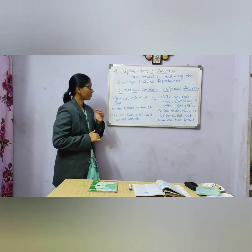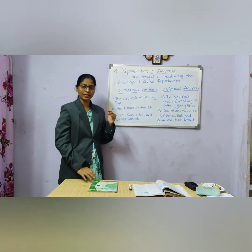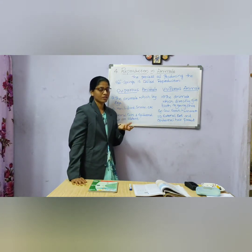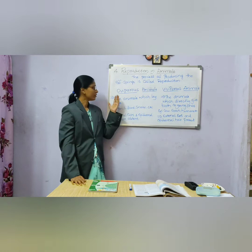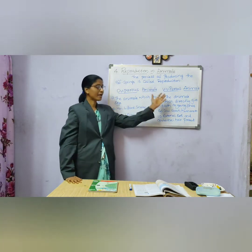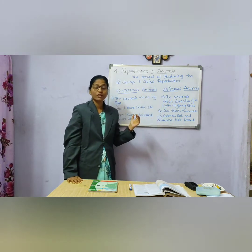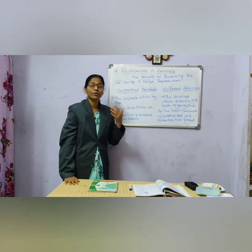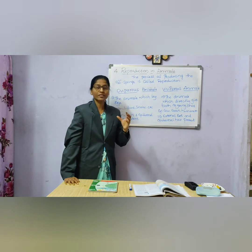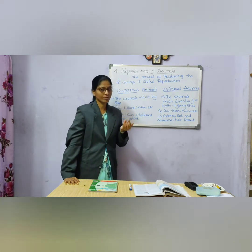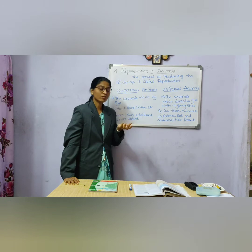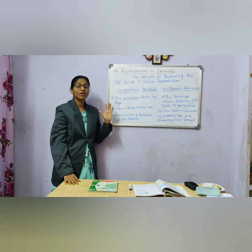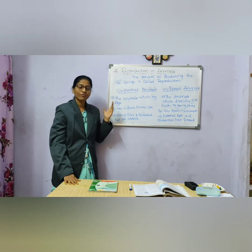Here we have two different types of animals depending upon the production of offsprings. They are oviparous animals and viviparous animals. Oviparous animals are the animals which lay eggs — the eggs hatch and they produce the offspring. The animals which lay eggs are called oviparous animals.